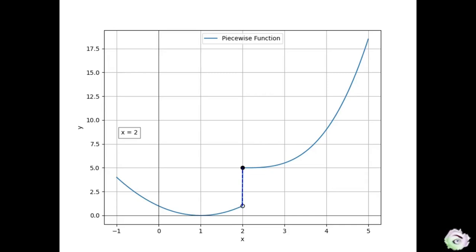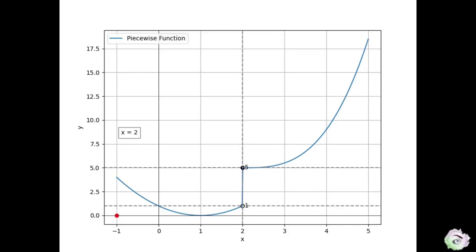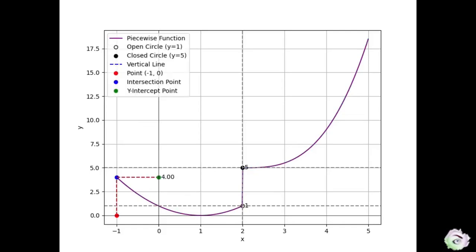Let us choose an x value on the left side of 2. Let us choose the furthest value under the graph on the left side of the 2, which is indicated by the red dot, to find the point on the graph corresponding to the x coordinate in red. Let's draw a vertical line from the red point to the graph, which is shown by the blue dot.